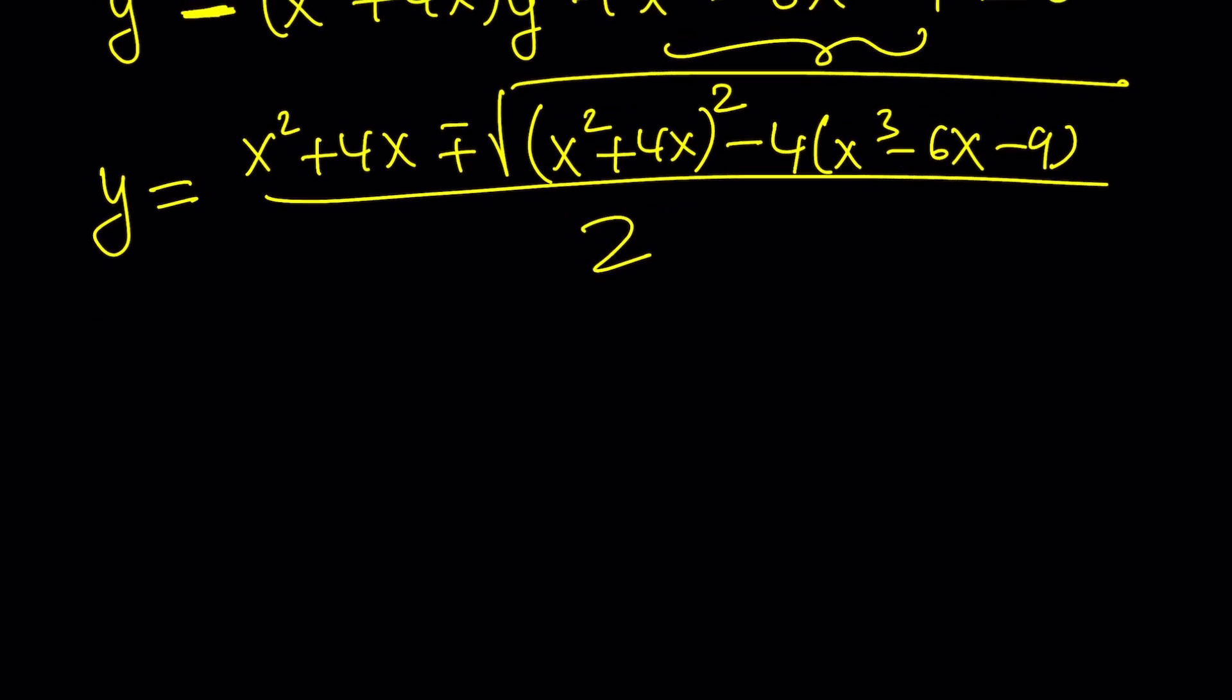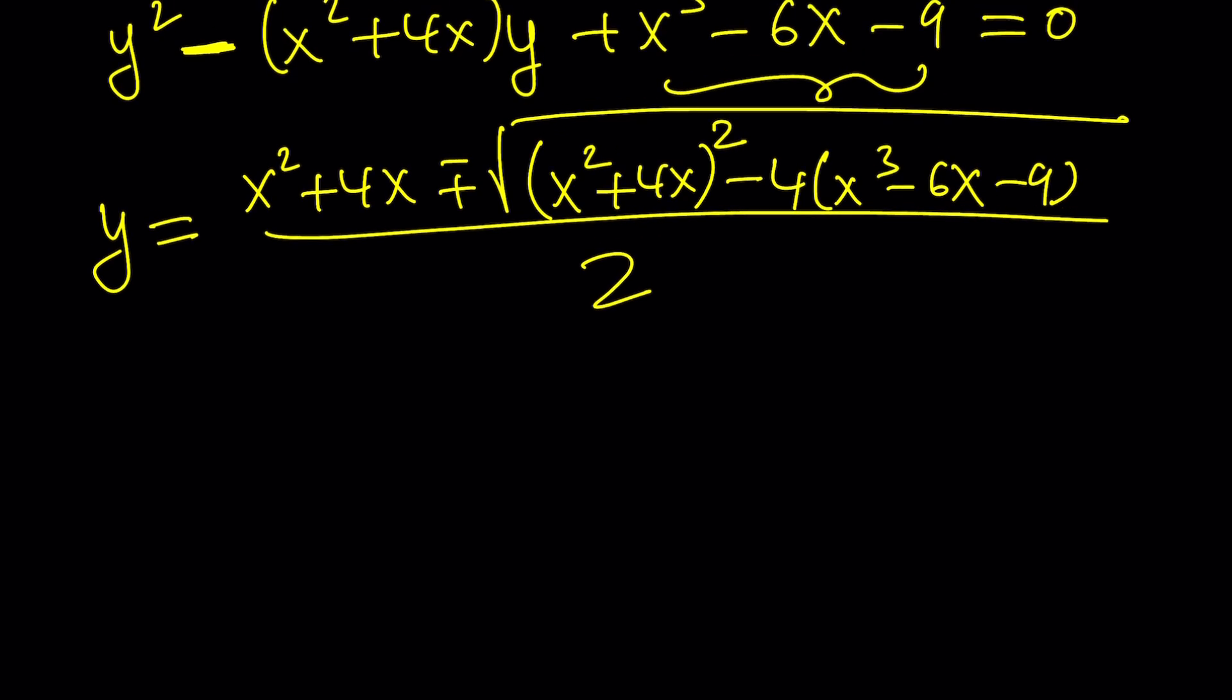Only nice if we can simplify the expression under the radical. Let's focus on that. If you square x² + 4x, you're going to get x⁴ + 8x³ + 16x². And then from that, minus 4x³ + 24x + 36. And I need to square root that. So this is the discriminant.